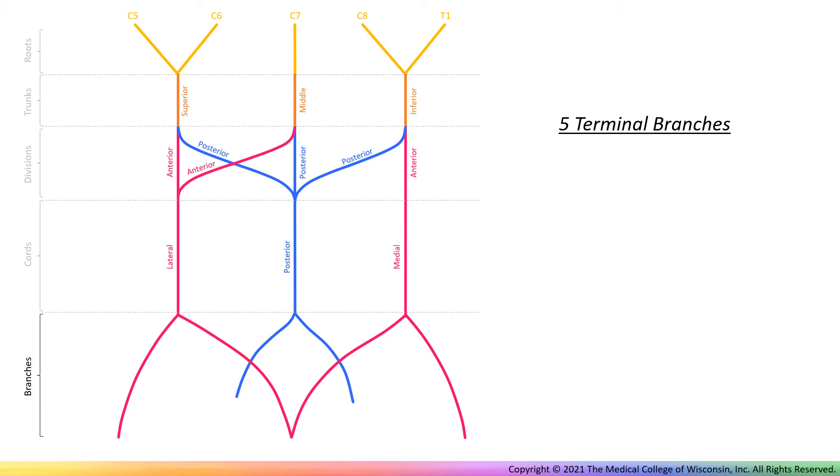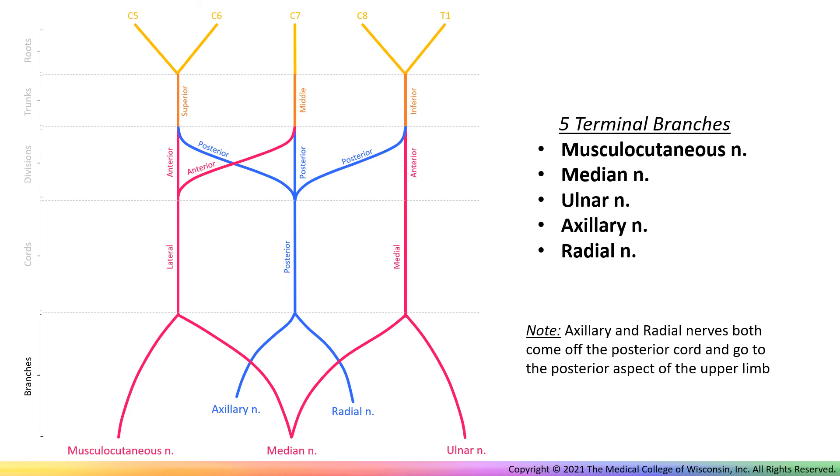Finally are the five terminal branches of the brachial plexus. Toward the anterior aspect of the body are the musculocutaneous, median, and ulnar nerves, which together make the shape of the letter M. Then the axillary and radial nerves come from the posterior cord and go on to supply the posterior aspect of the upper limb.